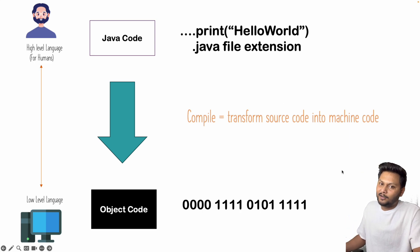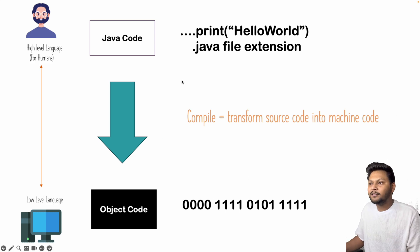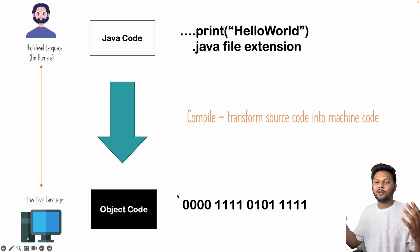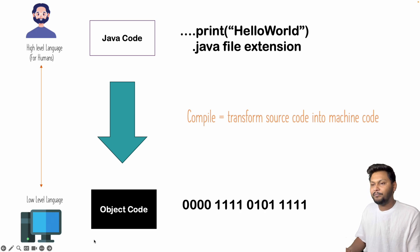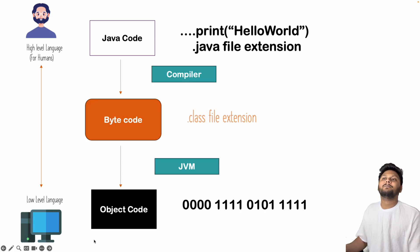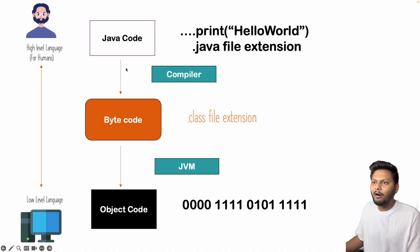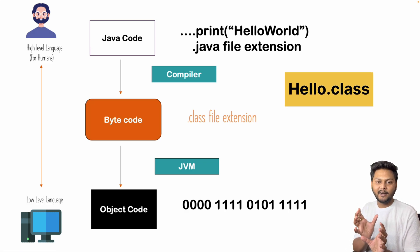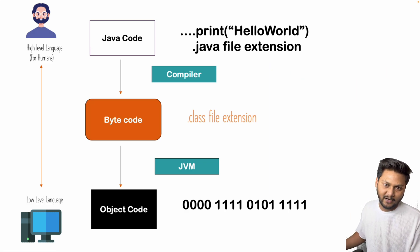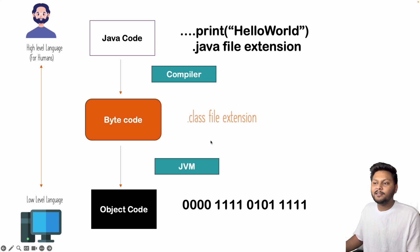We want to run this code on a computer, so we compile the code and transform the source code into machine code. Once that is done, we get a string of binaries — zeros and ones. This Java code needs to be converted to object code using a compiler, which converts the Java code to bytecode. After you compile Java code, you will get a .class file created with a .class extension.